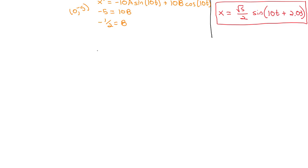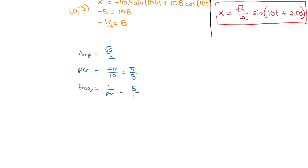From this equation, we can pull off some key information. The amplitude is the coefficient, √5 over 2. The period is 2π divided by b, or 2π over 10, which equals π over 5. The frequency in hertz is just the reciprocal of the period, which is 5 over π hertz. If you want it in radians per second, the b value of 10 gives you that directly. But hertz is probably more useful when discussing harmonic motion.